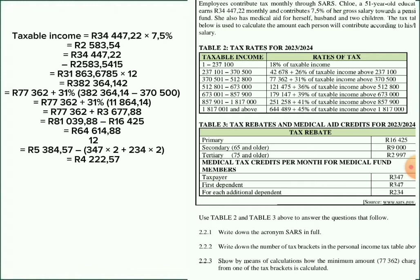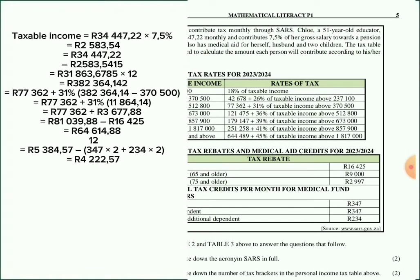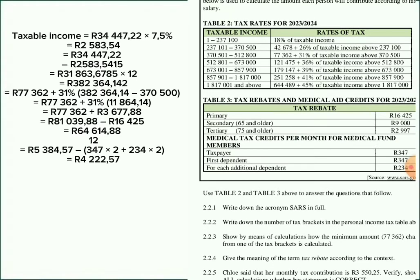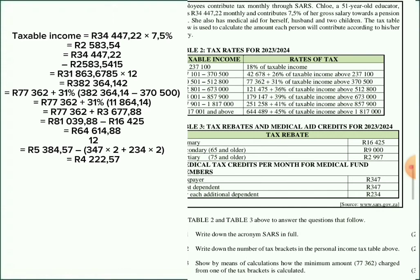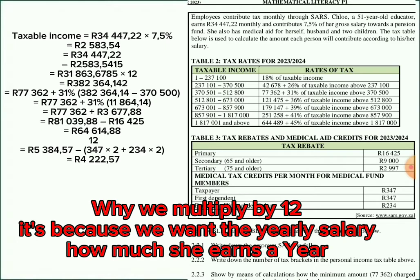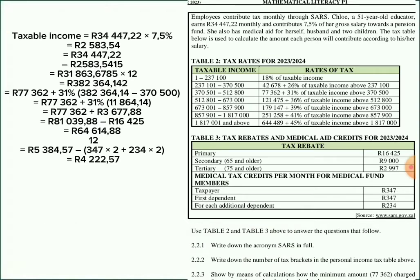She contributes 7.5% of her gross salary towards a pension fund — that money goes to the pension fund, so we subtract it. R34,447.22 minus R2,583.54 gives us R31,863.68. Then we multiply by 12 months — because Chloe earns R34,447.22 monthly — giving us an annual taxable income of R382,364.14.